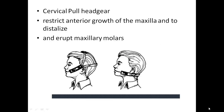The high-pull headgear is used in pre-adolescent Class 2 malocclusion with increased vertical dimension and increased gingival exposure. It consists of a high-pull strap and a standard face bow inserted into headgear tubes on the maxillary first permanent molar, restricting anterior and downward maxillary growth and controlling molar eruption. The cervical-pull headgear, used for Class 2 with deep bite, consists of a cervical neck strap and face bow, producing an extrusive and distal force on the maxillary first molars.